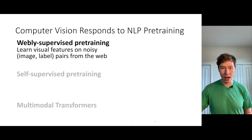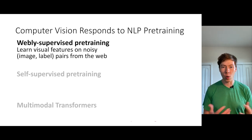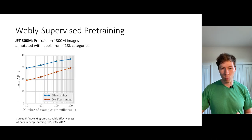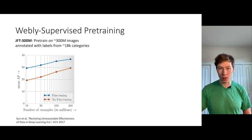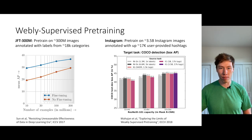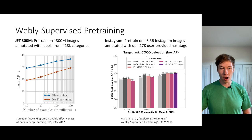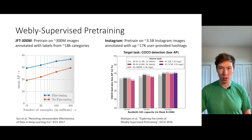With weakly supervised pre-training, the idea is that we download a bunch of noisy images and labels from the internet and learn visual features on this noisy data. One canonical example is the JFT dataset from Google, which consists of about 300 million images annotated with labels from about 18,000 different categories. A paper at ICCV 2017 showed that training on larger data in computer vision gives a lot of benefits on downstream tasks. Another canonical example is an Instagram pre-training project from Facebook, where they trained on up to 3.5 billion images to predict user-provided hashtags, and were able to outperform supervised pre-training on ImageNet.